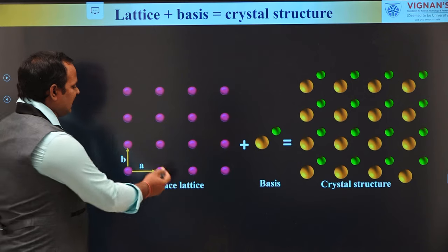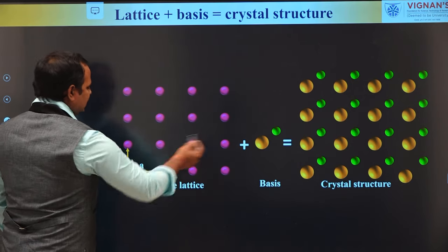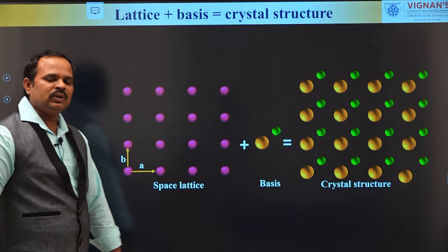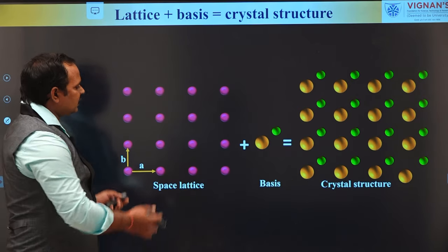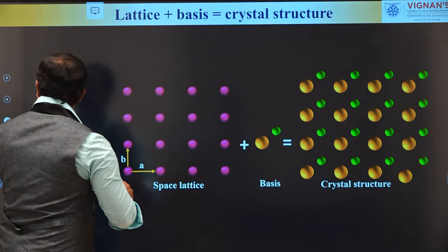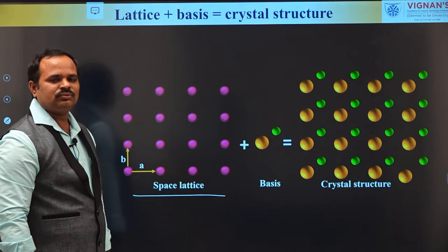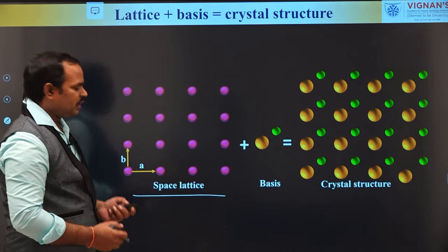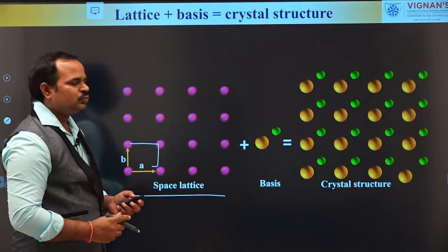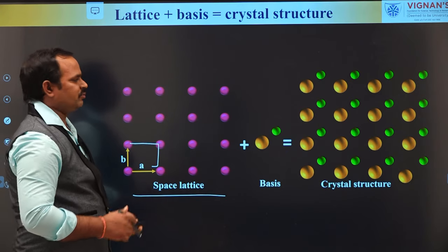As you can see in the picture, this is the lattice and the basis. When we replace the lattice points with the basis, we get a total crystal structure. Now, in order to understand the properties of the crystal, do we need to study the entire lattice? No, not required. If we can study the smallest volume of this lattice which can give the properties of the entire crystal system, that should be enough.